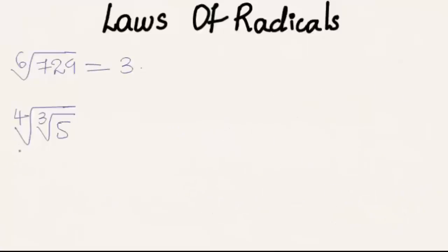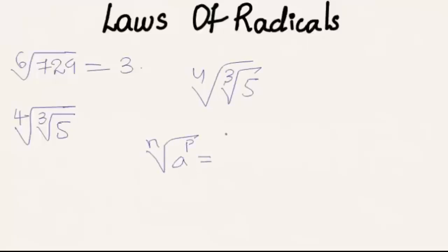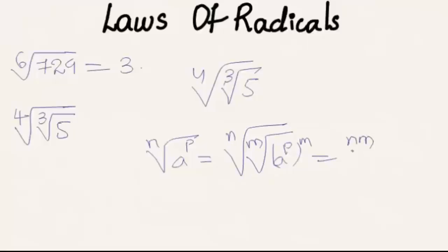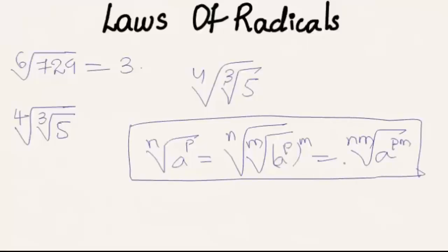The next example is the 4th root of the cube root of 5. Using the law that the nth root of the m-th root of a to the power p equals the nm-th root of a to the power p times m, we can write the 4th root of the cube root of 5 as equal to the 12th root of 5.